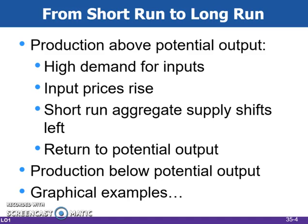In the long run, nominal wages can adjust in response to changes in the price level. In that situation, an increase in prices leads to an increase in input prices, which will result in the short run aggregate supply curve actually shifting upward to a new level. If prices fall, the AS curve shifts downward. These shifts allow us to derive a vertical long run aggregate supply curve located at the full employment output level.